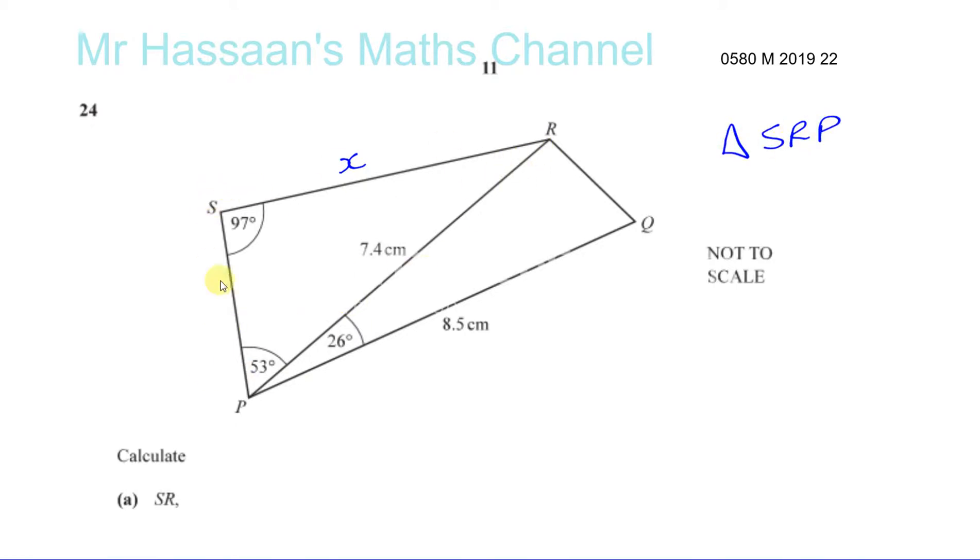In this triangle SRP, we see that it's not a right angle triangle, so we cannot use SOHCAHTOA. However, we have an angle that's opposite the side we want to find, and we have an angle and a side that are opposites. So we can use the sine rule to calculate the side we're looking to find.